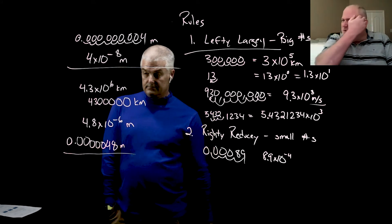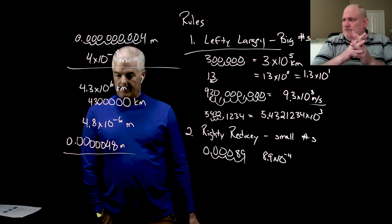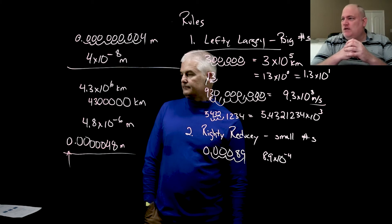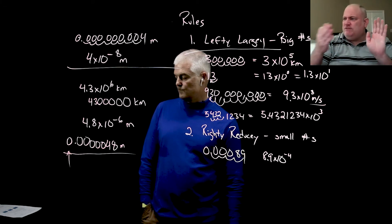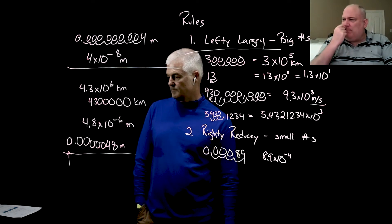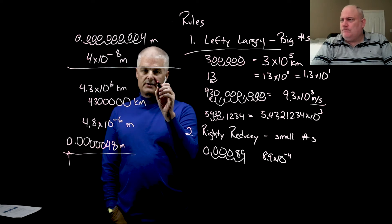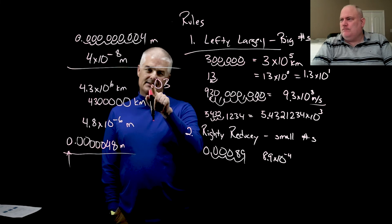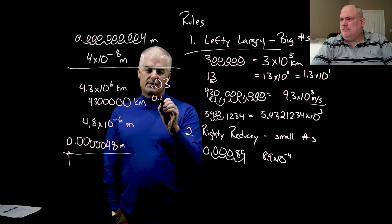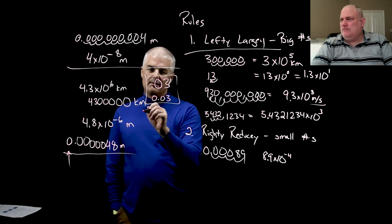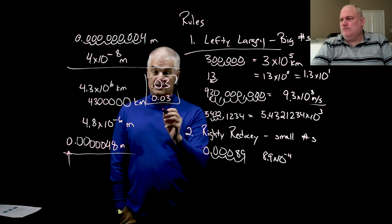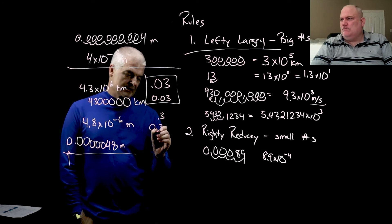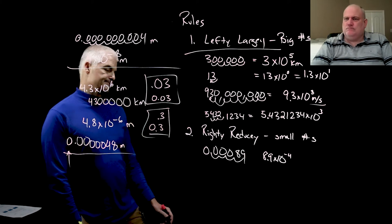Always write with just one number to the left of the decimal — we call that 'good form.' If you have 0.03, sometimes it's hard to see the decimal and you miss it. Writing it as 0.03 versus .03 — if your eye misses the decimal point on '.3' you could misread the number. Having that leading zero makes the decimal easier to spot. So always use good form when writing scientific notation.